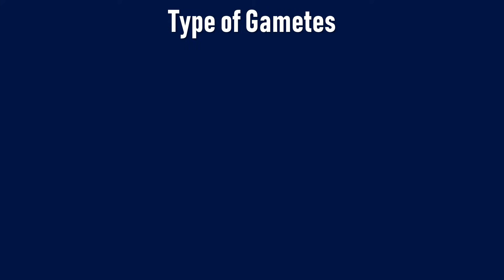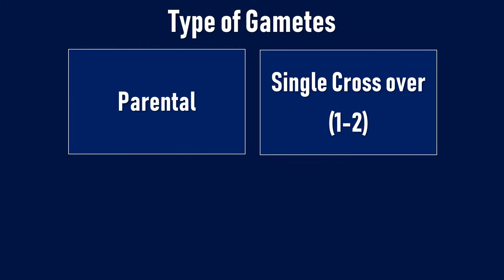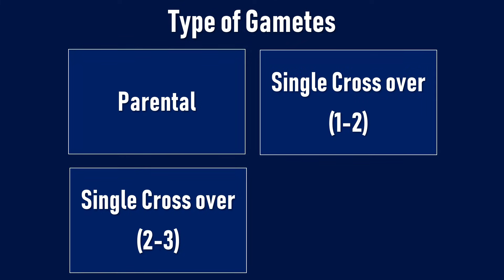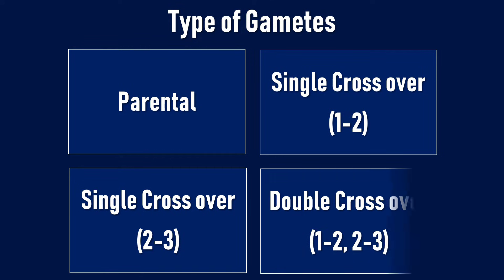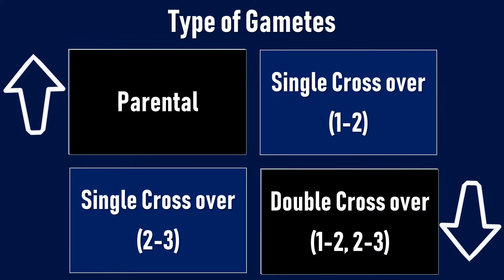In every question, we will have eight types of gametes: two parental type, two single crossover type between gene 1 and 2, two single crossover types between gene 2 and 3, and two gametes for double crossover. It is very easy to identify the parental and double crossover gametes in most questions. The gametes showing the highest number of progenies are the parental type and the gametes showing the lowest number of progenies are the double crossover type.